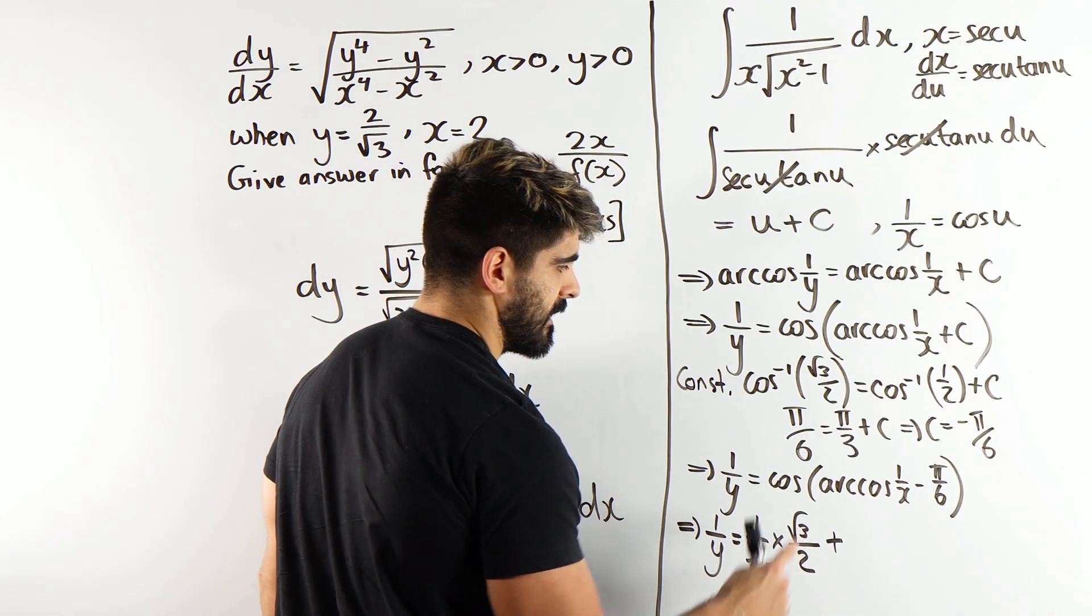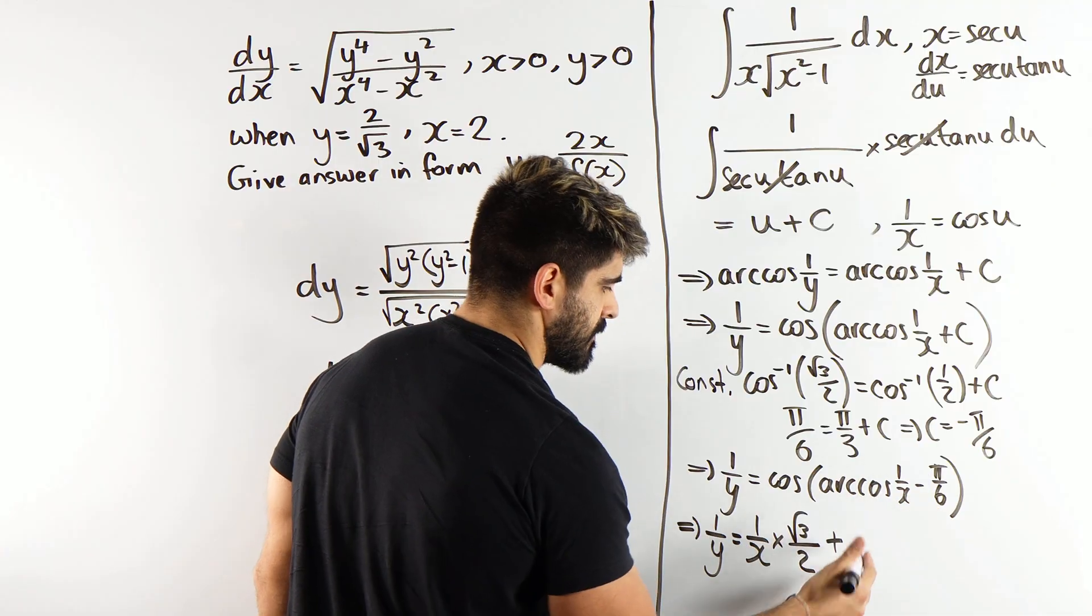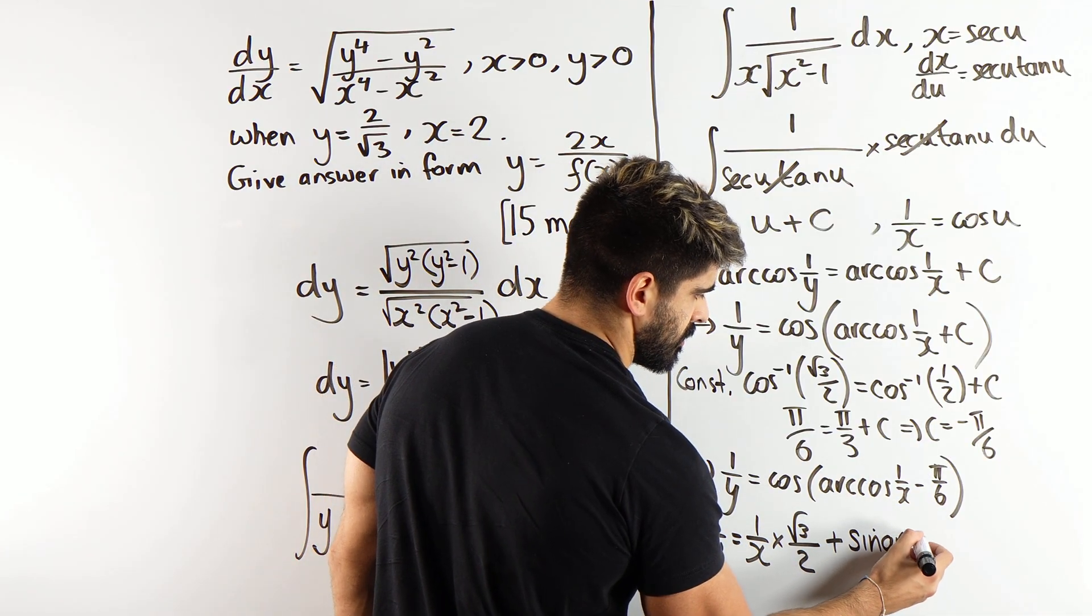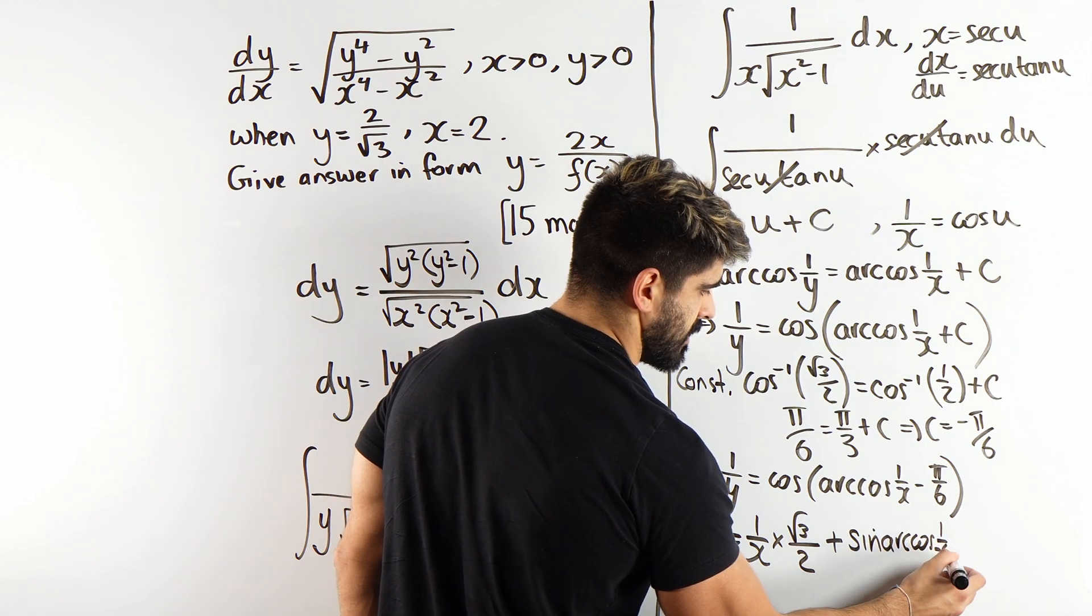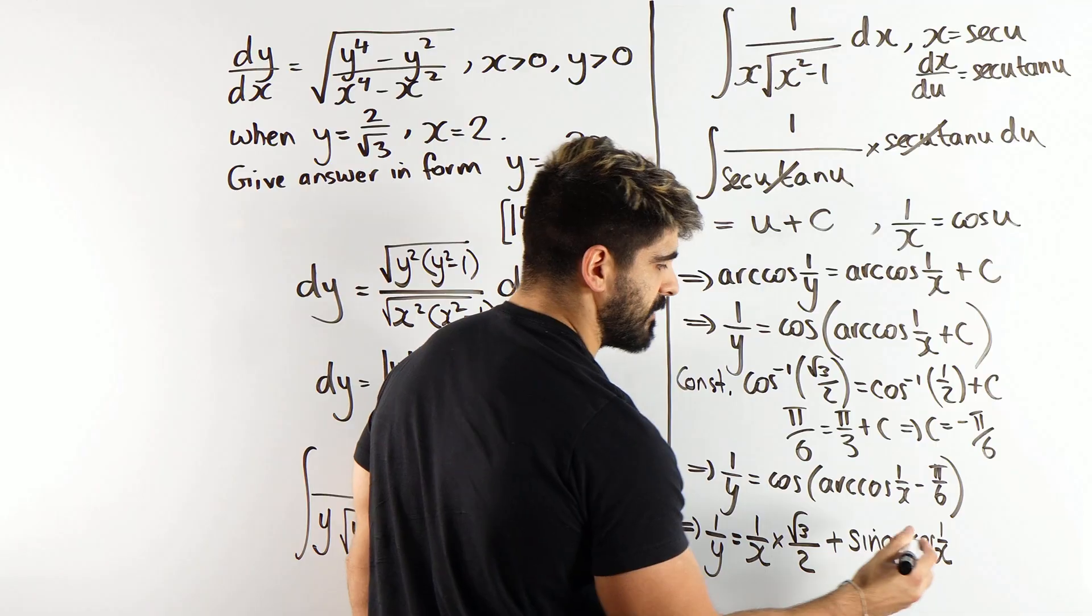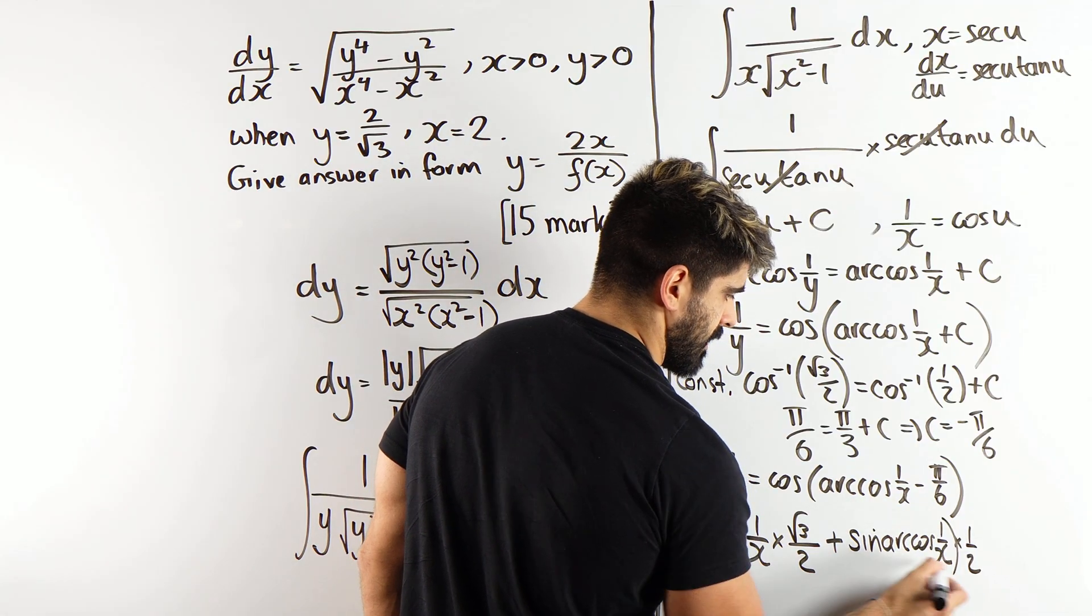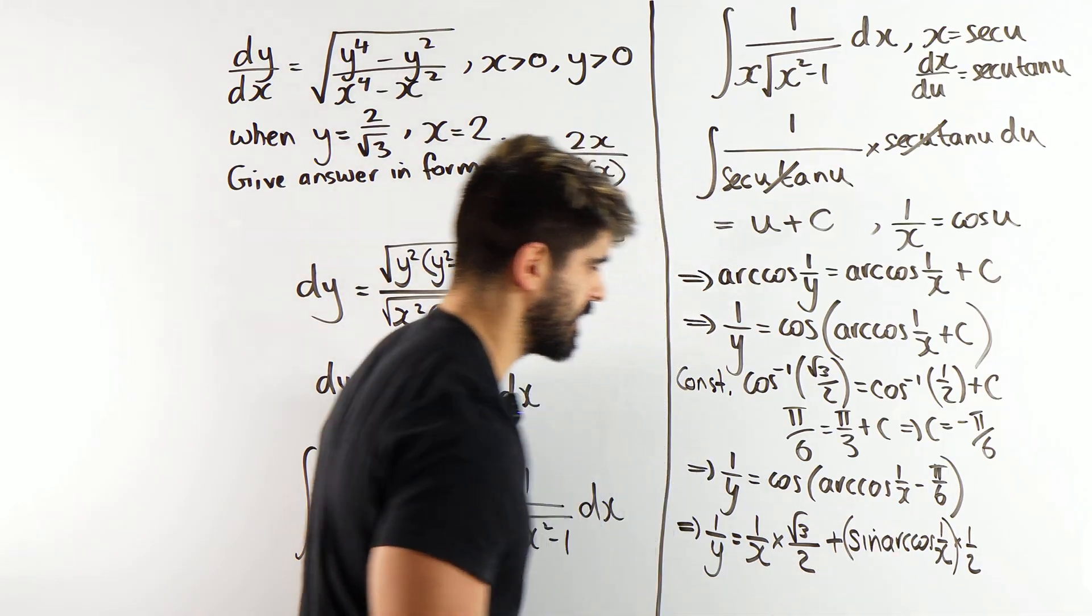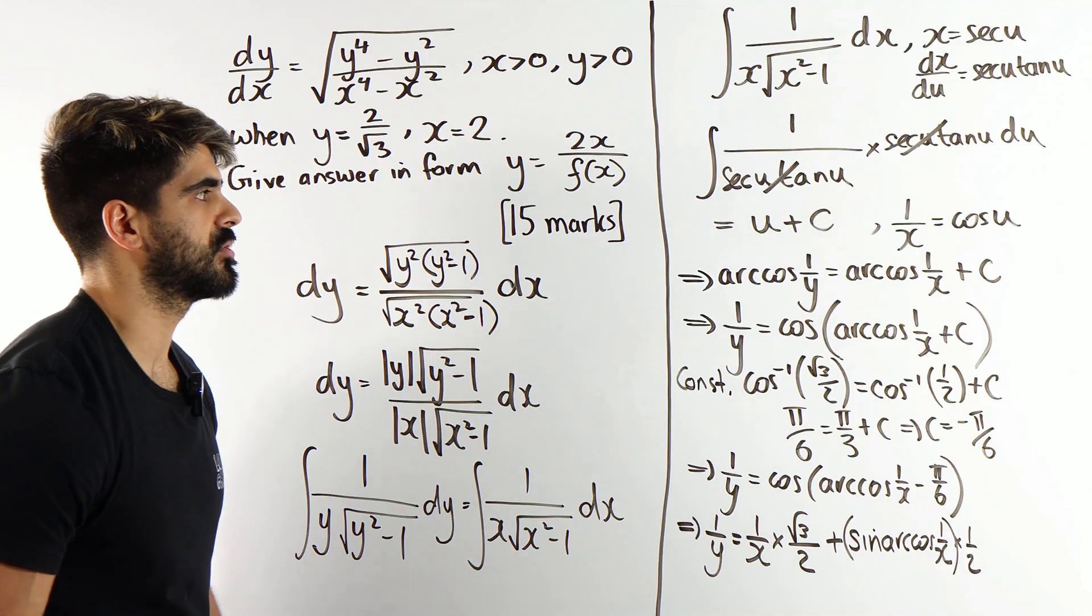So, it will become plus sine of this, sine of this. So, it will be sine of arc cos of 1 over x, then sine of pi over 6, which is a half. So we have all this. We're going to have to figure out what that is, which is, I guess, another challenging part to this problem.